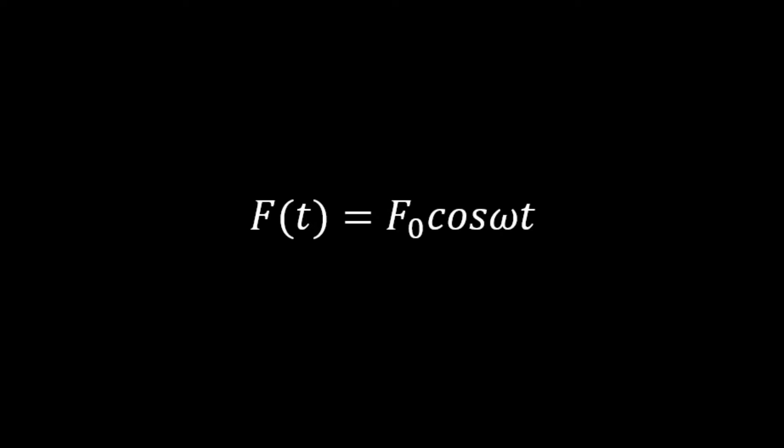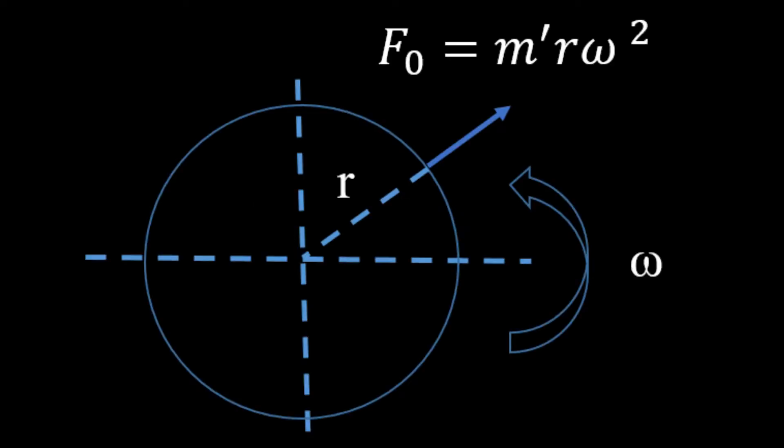Notice that this exciting force can be created by an unbalanced mass m' with unbalanced distance r at constant angular velocity omega of the shaft, since centrifugal force becomes f0 equals m' multiplied by r and omega squared. This exciting force causes vibrations on the system, and a normalized shaking force t is transmitted to the base.